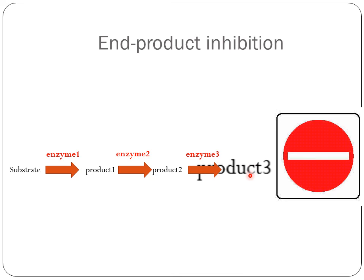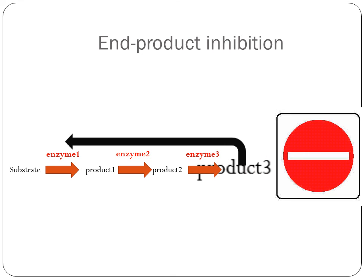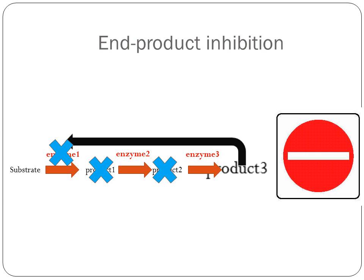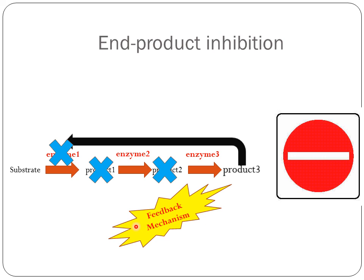That's why there is a sort of control: when product 3 exceeds the normal level, it acts as an inhibitor to enzyme 1. When enzyme 1 is blocked, product 1 will not be formed, and consequently product 2 and product 3 will not be formed either. This leads to product 3 decreasing back to normal levels. This sort of control is called a feedback mechanism, and it is needed throughout the body to keep molecular levels within normal ranges.